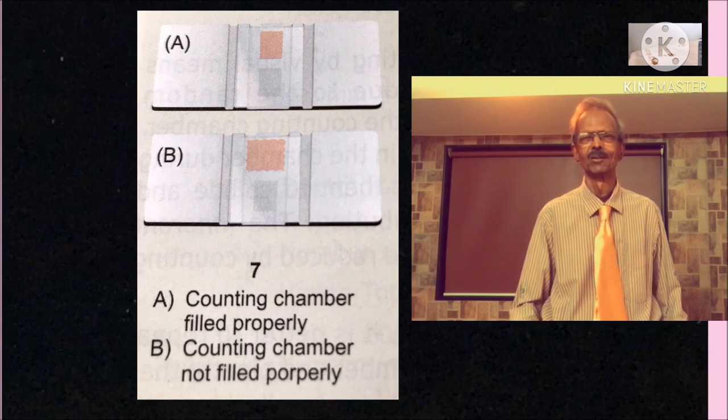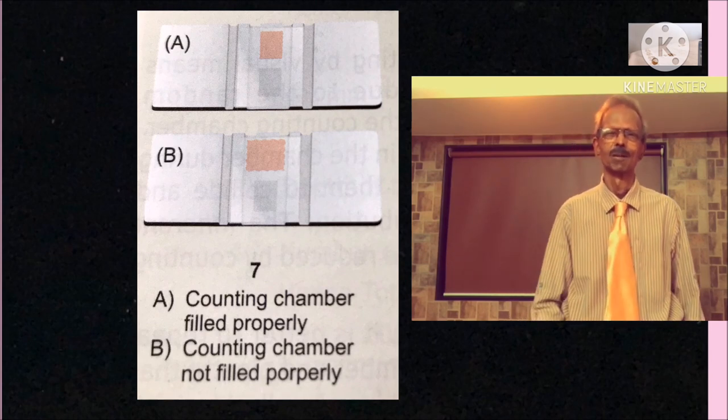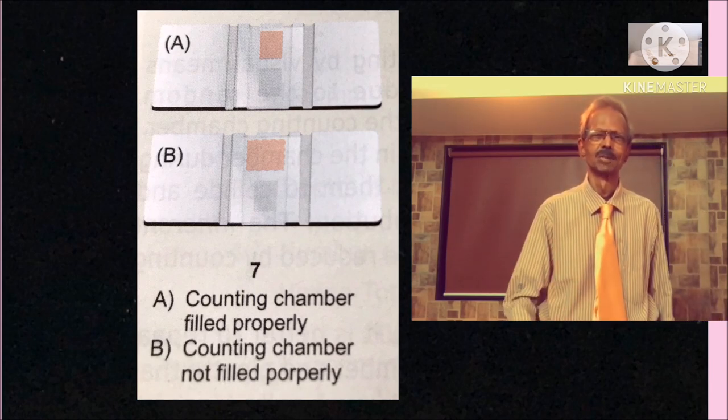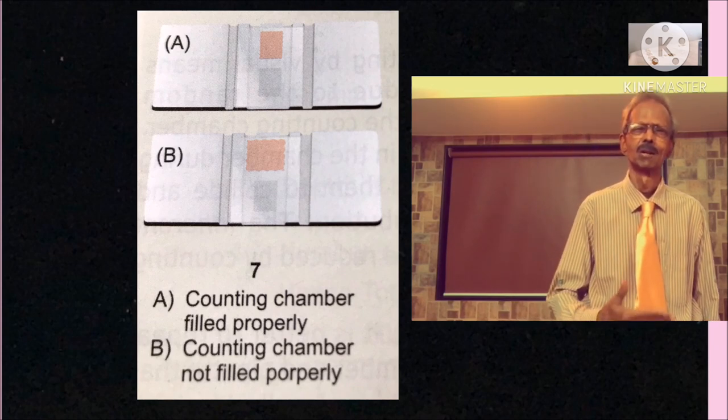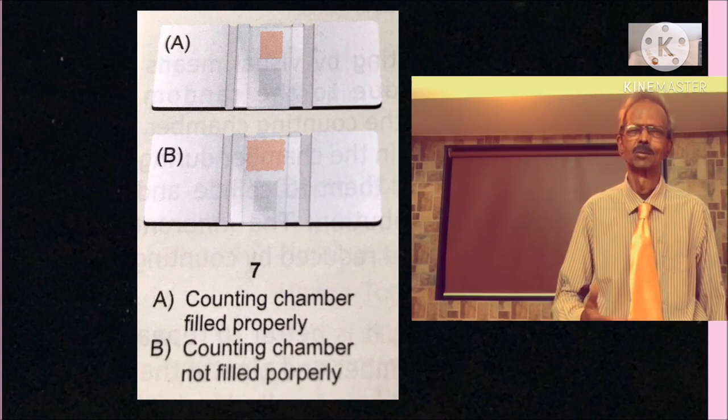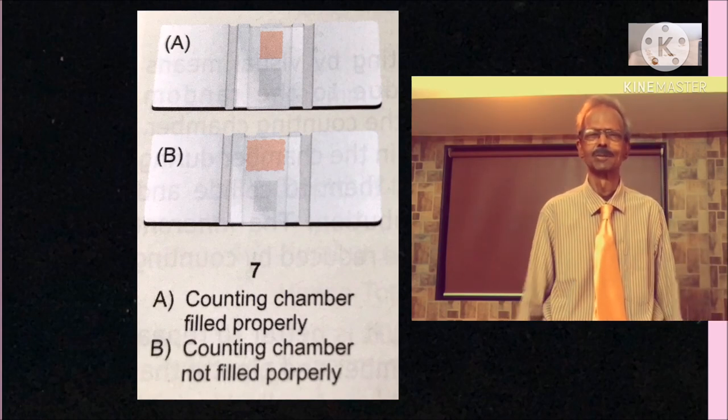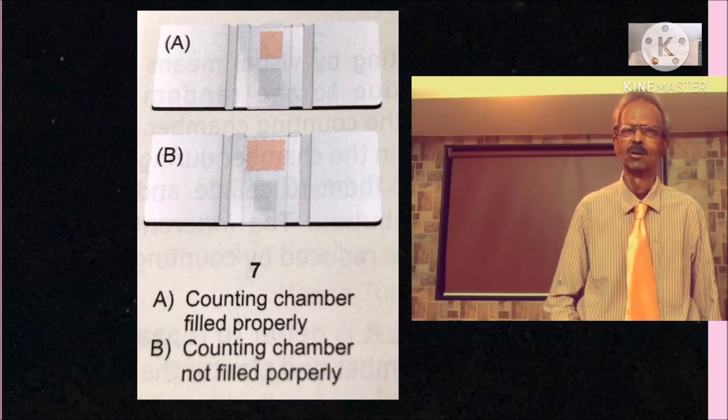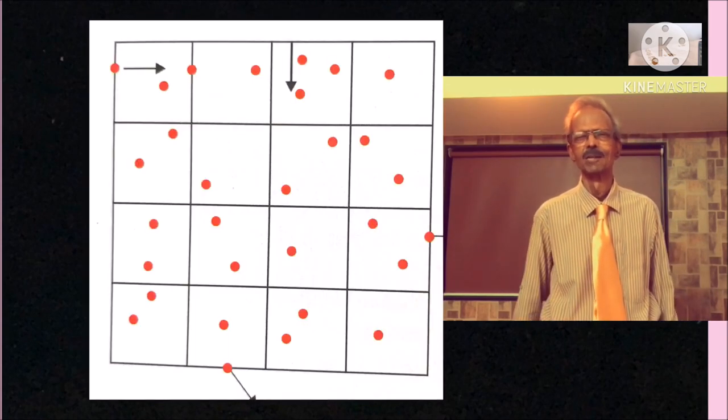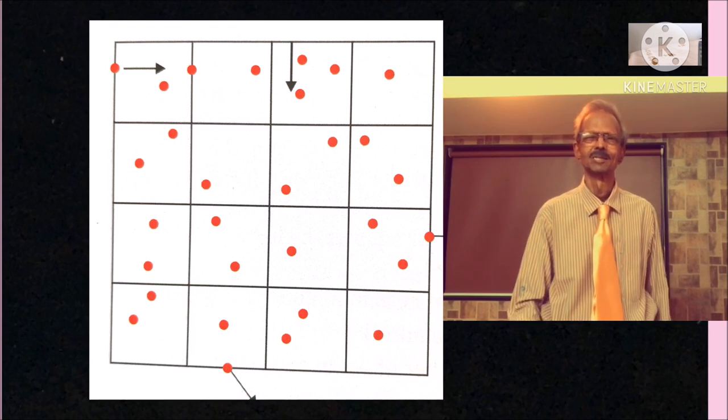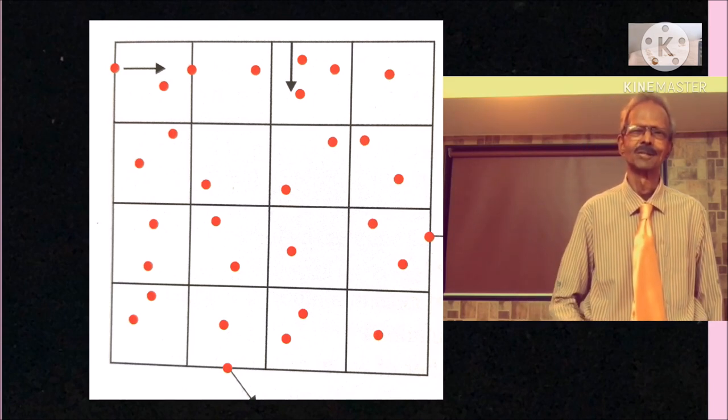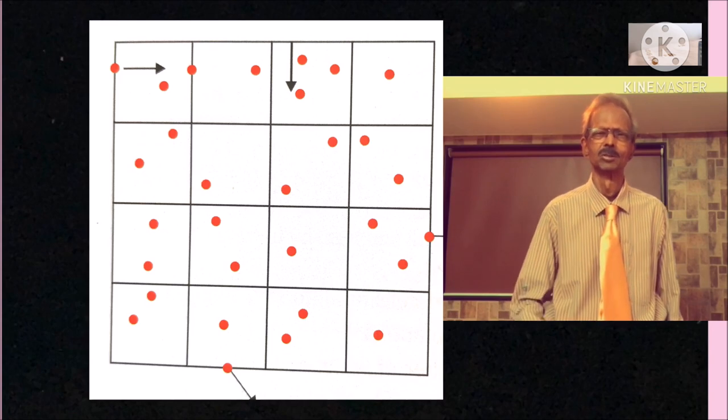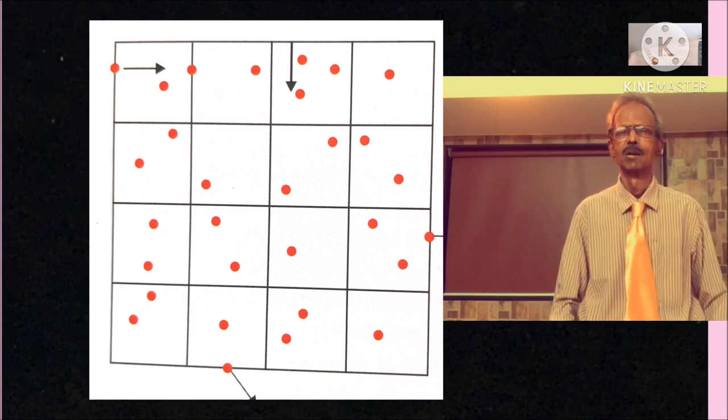In blood cell counting, you must take good precautions for accurate cell count determination. First of all, practice filling of counting chamber well. As shown on the left hand side, figure A indicates counting chamber is filled properly and figure B indicates that counting chamber is not filled properly. Similarly, air bubbles should not be present. And when cells are counted, you need to count cells touching the border line of counting area also as shown on the left hand side but of only 2 of any 2 sides of the square. Then for proper understanding of microscopes and microscope practice, watch our YouTube video.